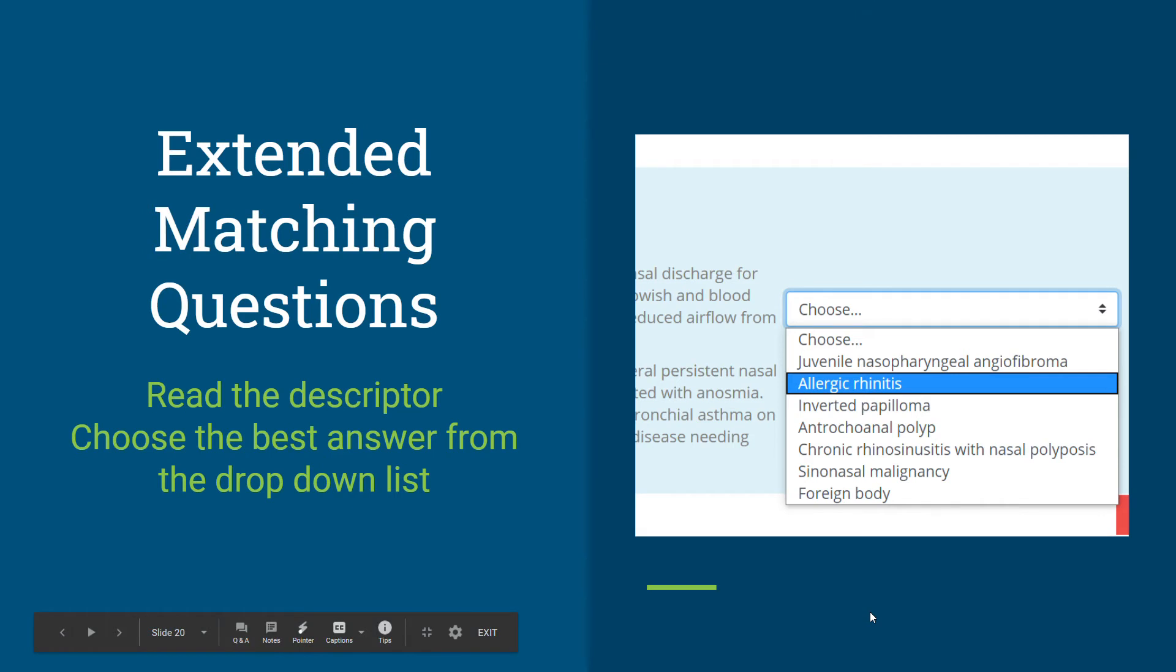For extended matching questions, students will need to read the descriptor. Then you will need to choose the best answer from the drop down list given. In total, there are seven options or eight options to choose from.